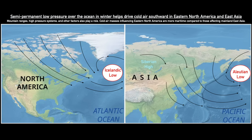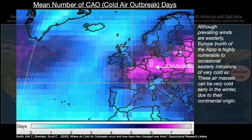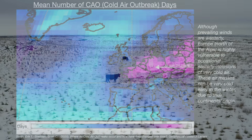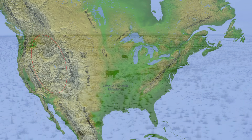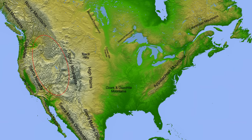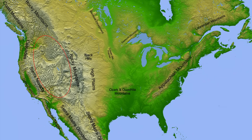Seasonal lag is very limited in East Asia compared to eastern North America, thanks to this Siberian air. The Aleutian low helps to force cold air southward into East Asia just as the Icelandic low does in eastern North America, but this cold air is much more continental in origin. And even the people in Western Europe have to keep this cold continental air in mind. For those living north of the Alps in particular, very cold continental air can sweep in from the East periodically, and this air will already be very cold very early in the winter.